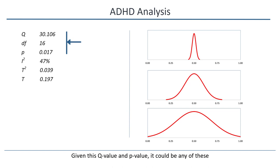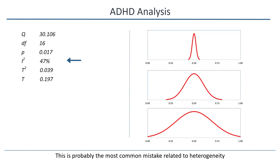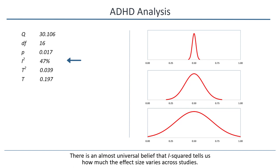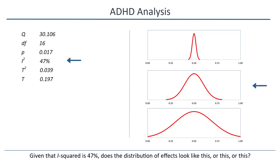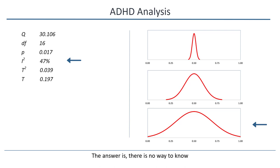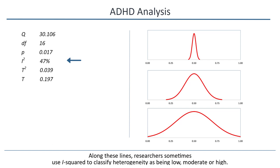The next statistic reported is generally the I-squared value. In this analysis, I-squared is 47%. This is probably the most common mistake related to heterogeneity. There's an almost universal belief that I-squared tells us how much the effect size varies across studies. But the fact is, this is incorrect, and I can show that very simply. Given that I-squared is 47%, does the distribution of effects look like this, or this, or this? The answer is there's no way to know. Researchers sometimes use I-squared to classify heterogeneity as being low, moderate, or high. On that basis, an I-squared value of 47% would be classified as moderate.